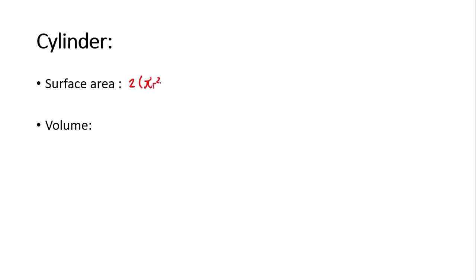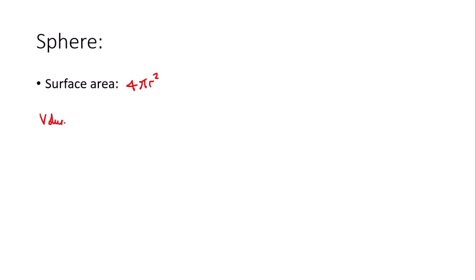For a cylinder: the surface area is 2πr² + 2πr × height, and the volume is πr² × height. For a sphere: the surface area is 4πr², and the volume is (4/3)πr³.